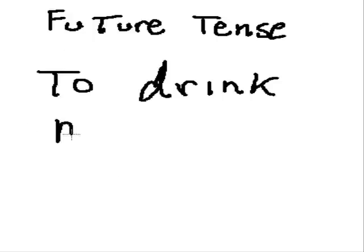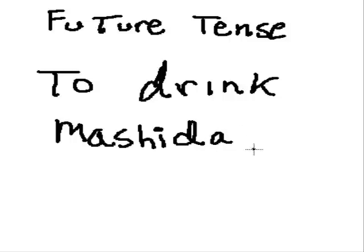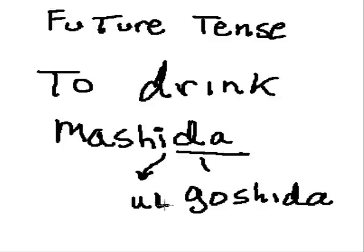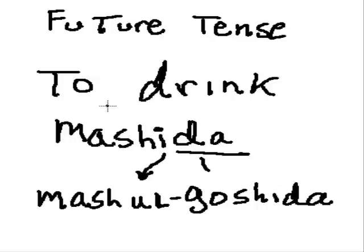The next one is to drink, and that's mashida. That's not an a now — that's an i. The da becomes goshida, but now I have an i there, so when it's an i, it becomes a ul. Drop down the mash: mashilgoshida. To drink — mashida — will drink: mashilgoshida.